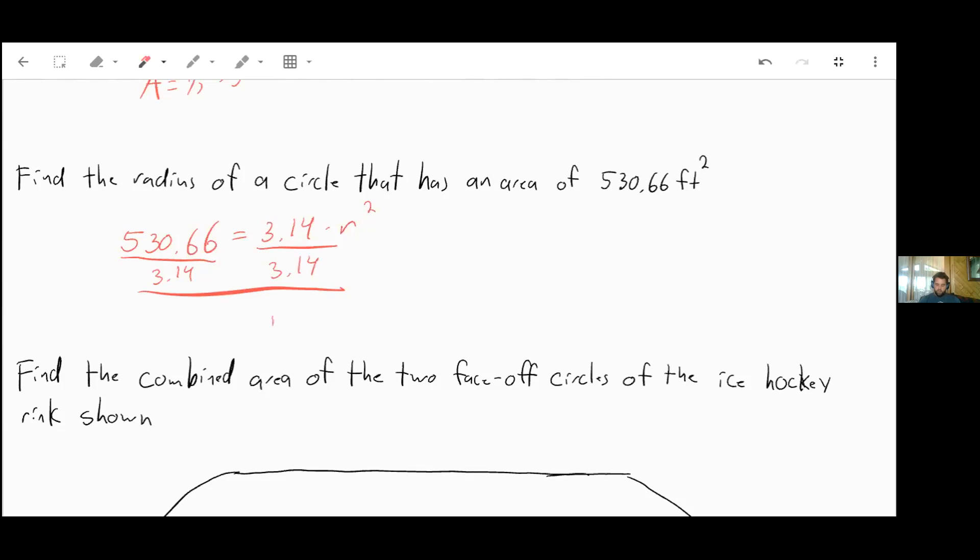So you are going to divide both sides by 3.14. And when we do that, we'll come out with the radius squared is going to be equal to 169. Well, now to get the radius by itself, you just need to take the square root of both sides, and you'll find out that the radius is equal to 13.